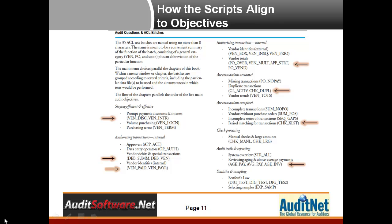This is a quick cheat sheet showing where all of the scripts align to the actual audit questions. We used to call ACL batches 'batches' ten years ago, so you'll see that notation, but they're actually called scripts now. Of those 35 ACL scripts, you can very quickly see on this page how they align to the various audit questions and objectives.